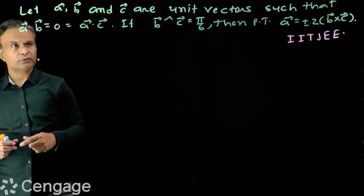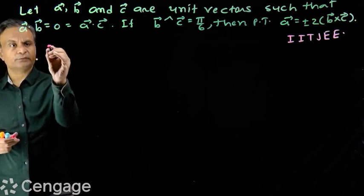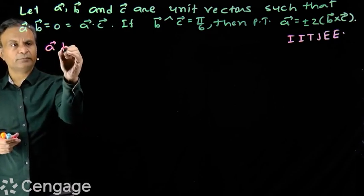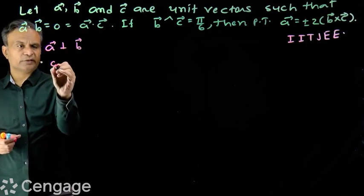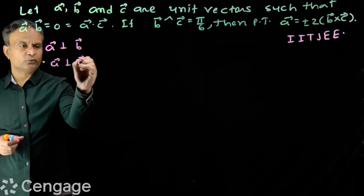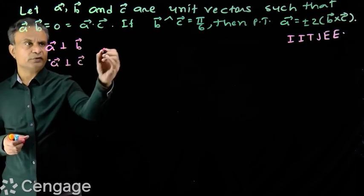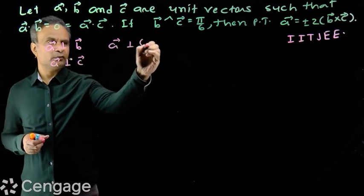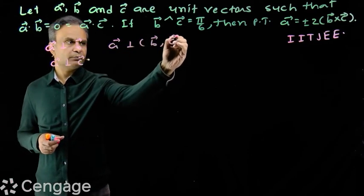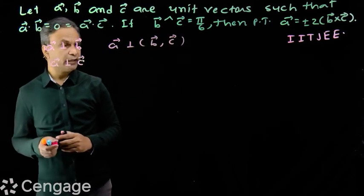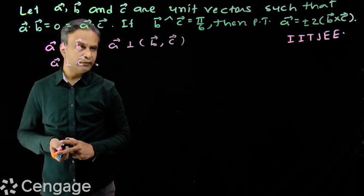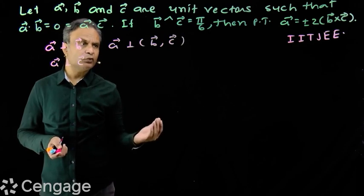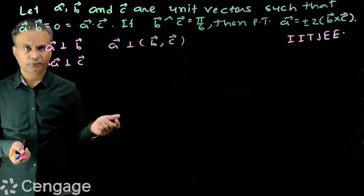Since a dot b equals zero, vector a will be perpendicular to vector b. Also, a dot c equals zero, so vector a will be perpendicular to vector c. Therefore, vector a is perpendicular to both vectors b and c, which means vector a will be parallel to vector b cross c.